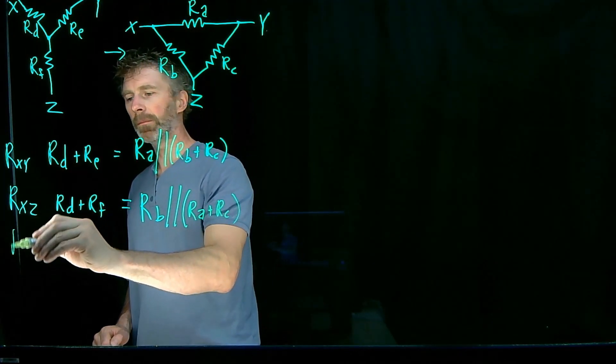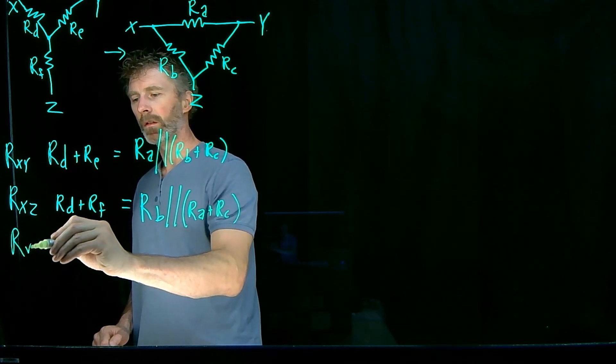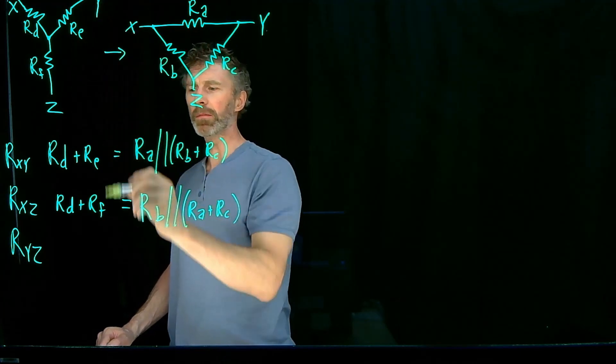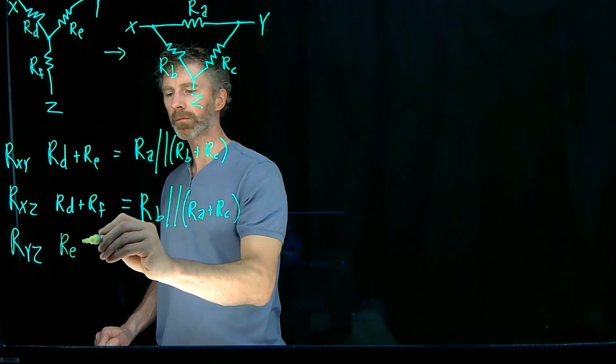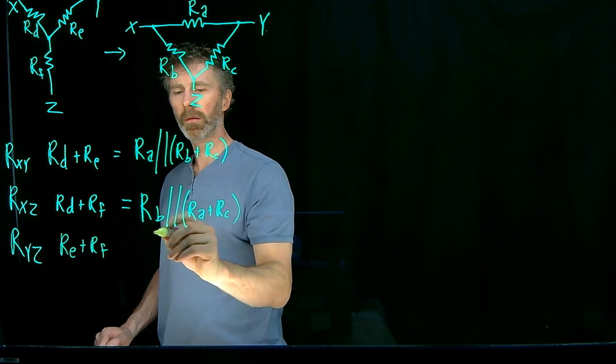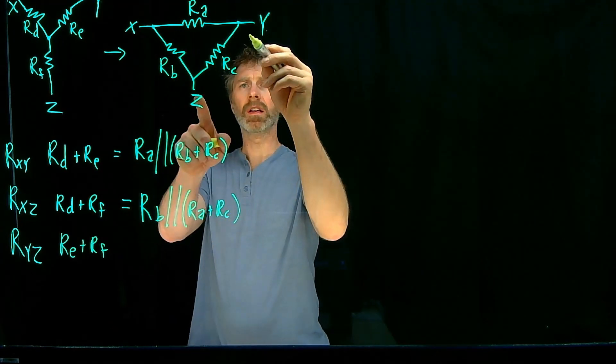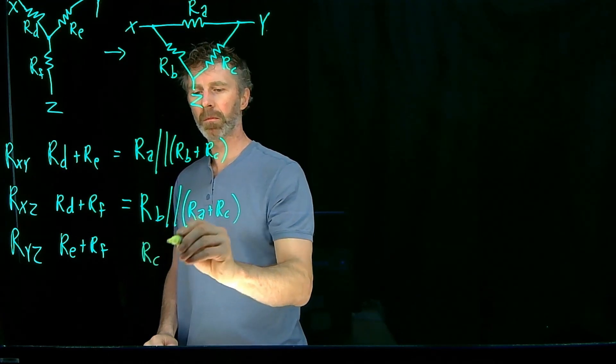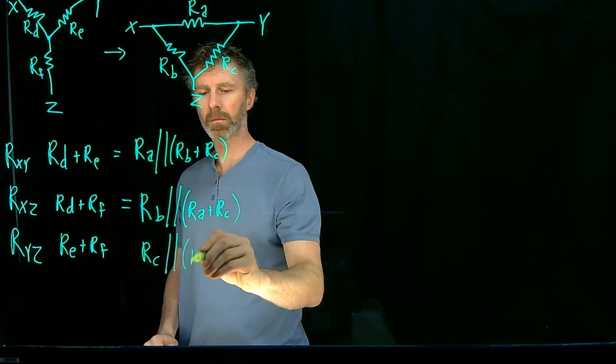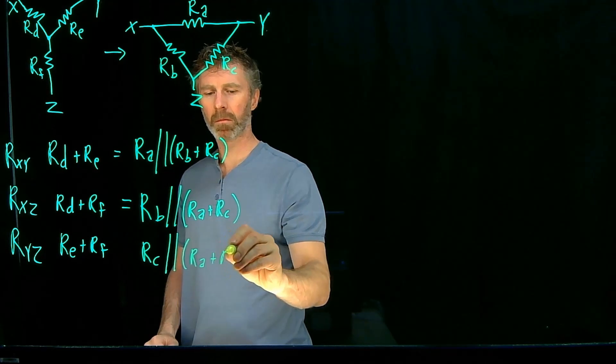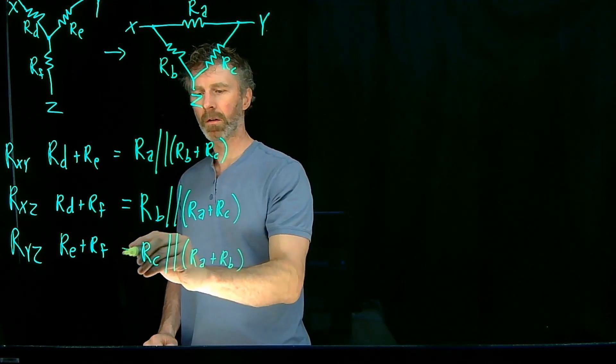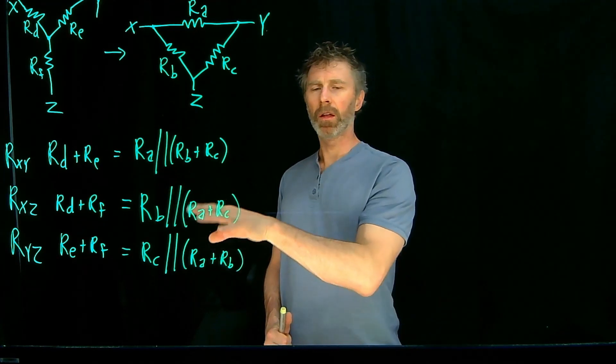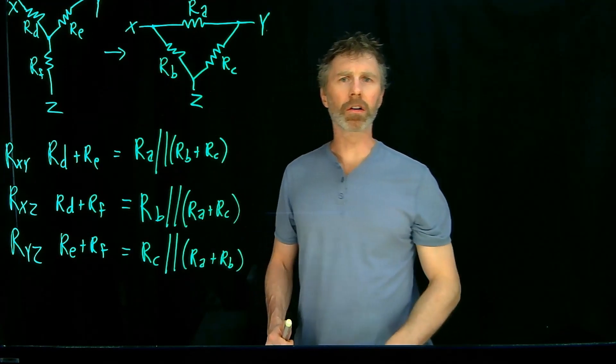And then finally, that resistance between Y and Z. In the Y configuration, it's just RE plus RF. And in the delta configuration, it's RC in parallel to RA plus RB. As long as these three expressions are true, then these two circuits are going to be equivalent.